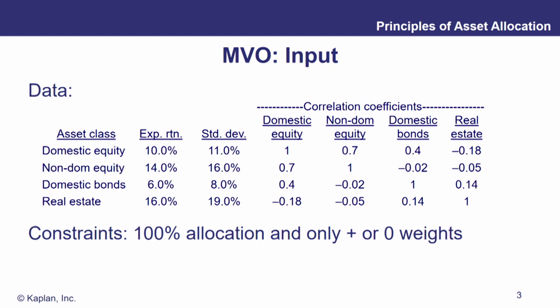Let's do an example. We've got some input data and we're going to feed it in and figure out what our efficient frontier looks like. We have four asset classes: domestic equity, non-domestic equity, domestic bonds, and real estate. Let's take a look at those expected returns and standard deviations — we can eyeball those and get a sense of how much bang we're getting for our buck, how much return we're getting for each unit of risk.